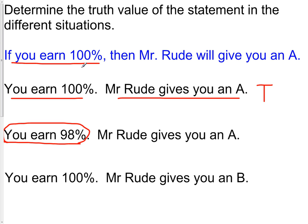We know that if you get 100%, you get an A. In this case, you earned 98%. We do not have the rule up here that covers 98%. So for that reason, Mr. Rude giving you an A is absolutely fine, because there was no rule behind what should happen.